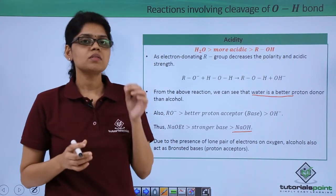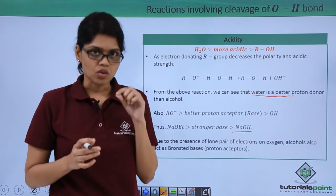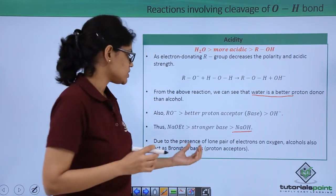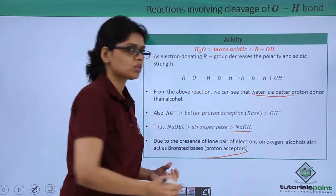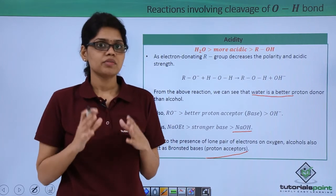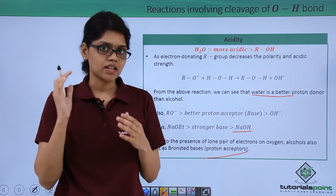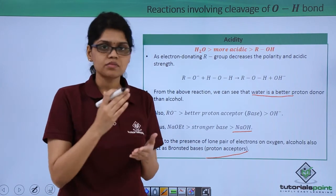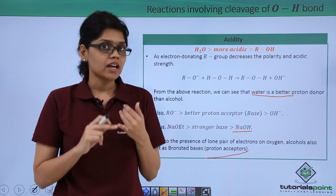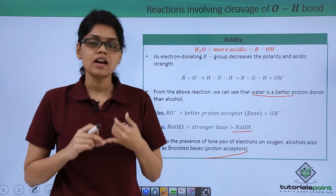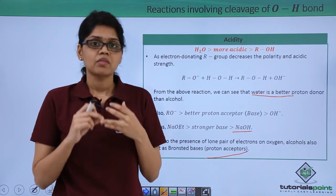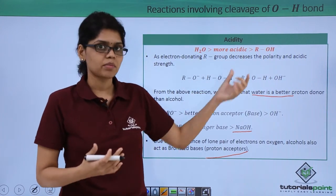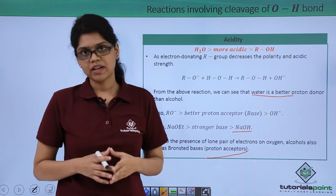Due to the presence of lone pair of electrons on the oxygen atom in alcohol, alcohols can also act as Brønsted bases or proton acceptors. To summarize, we have discussed the acidic nature of alcohols and phenols — primarily their reaction with metals where hydrogen is evolved, and their reaction with bases. We have also discussed why water is a much stronger acid compared to alcohol and the reasons behind it.